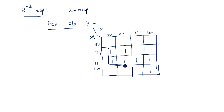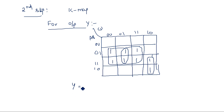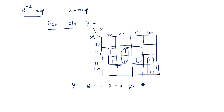From the K-map, we can group the ones: one group of four, another group of four, and two remaining cells. This gives three product terms, so Y equals B·C̄ plus B·D plus A·C·D̄.